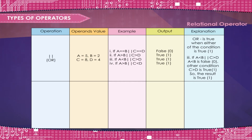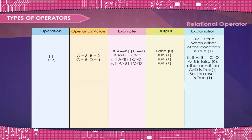Example 2: If A is greater than B or C is greater than D — True, 1. Example 3: If A is less than B or C is greater than D — True, 1. Example 4: If A is greater than B or C is less than D — True, 1.